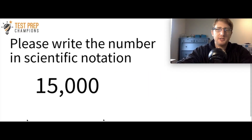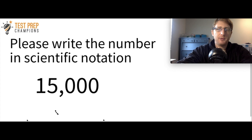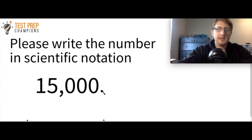I think one of the best places to start is to just jump in with an example. Please write the number in scientific notation. Whenever you have an example like this, we always want to put the decimal point between the first and second digits. Right now my decimal point is after the last zero, so I'm going to take this decimal point and move it to the left until I get it between the one and the five.